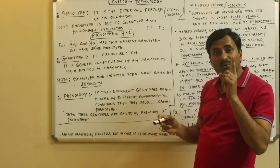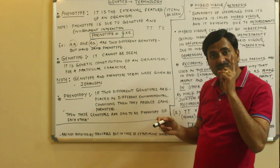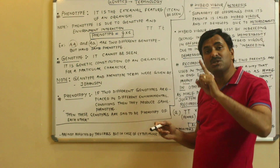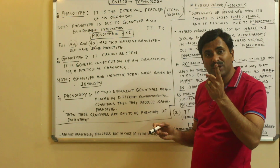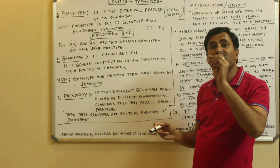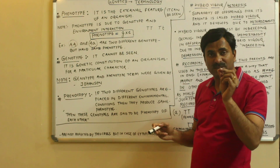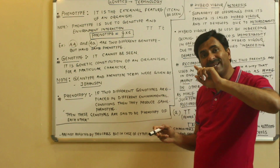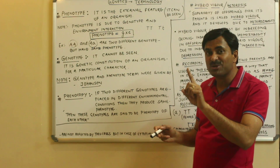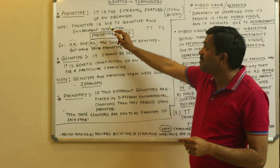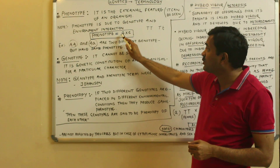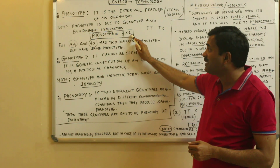Always remember that phenotype is the result of genotype and environment interaction. Genotype produces the phenotype, and a small impact of the environment is also there on the phenotype of an organism. So genotype and environment interaction produces the phenotype. Phenotype never produces the genotype. Phenotype is equal to genotype plus environmental interaction.